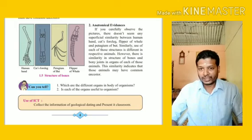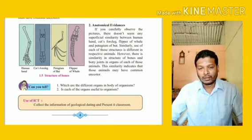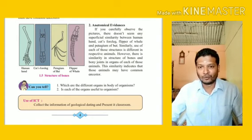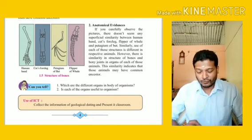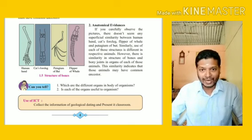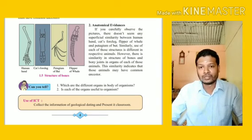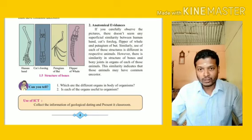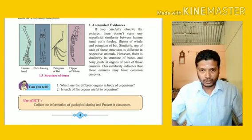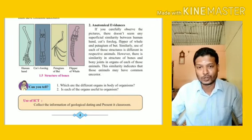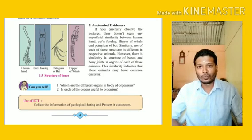I think it's a flipper of a whale, a human hand, a bull's leg, and one more — I don't have the textbook with me right now, but you can compare in the textbook while watching the video. If you see the structure, a whale flipper is completely different from a human hand, which is completely different from a bull's leg or a bat's wing. They all have different functions.